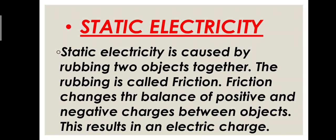Let me give you an overview of the previous video. Static electricity is caused by rubbing two objects together, and this rubbing between two objects is called friction. When rubbing occurs, there is an imbalance between the positive and negative charges between the objects. Whenever this imbalance occurs, it results in an electric charge and static electricity is produced. So static electricity is correlated with friction.